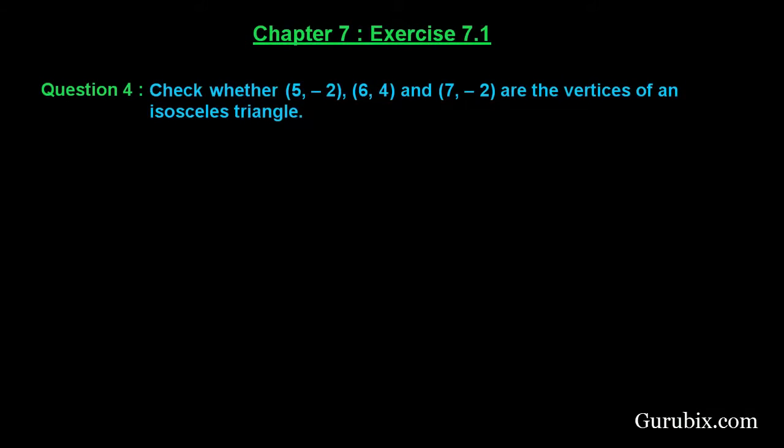Welcome friends, let us solve question number 4 of exercise 7.1 of chapter 7. The question says check whether the given points (5, -2), (6, 4), and (7, -2) are the vertices of an isosceles triangle. Let us solve the question.